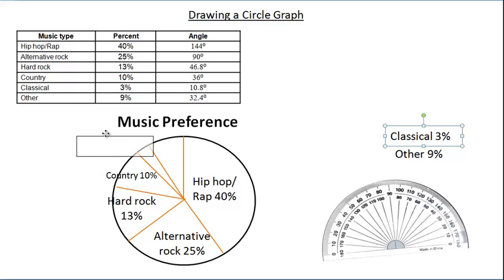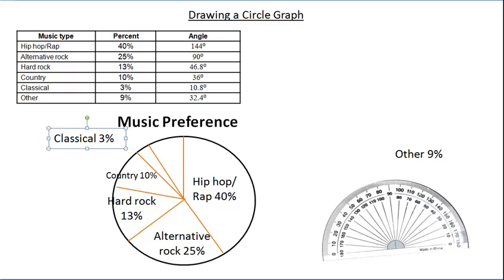I don't have room to put that in there, so we'll put this right beside it. Sometimes what you'll see in circle graphs is they'll actually have an arrow that goes and points toward the category, something like that, so to know that that is the classical.